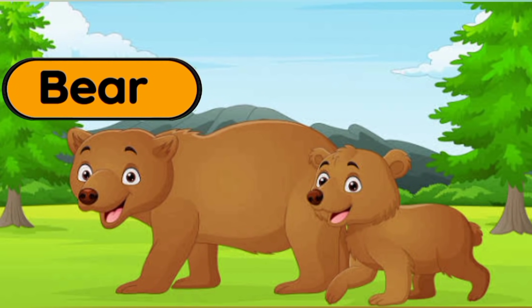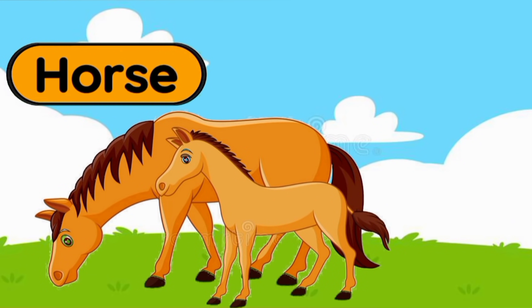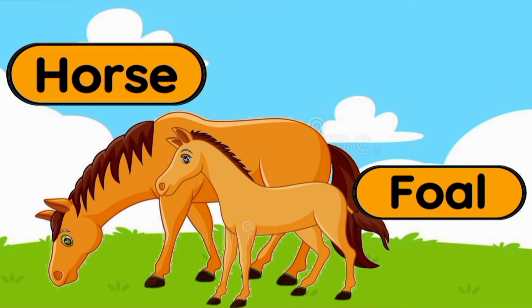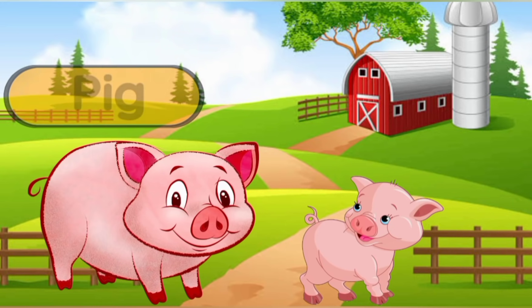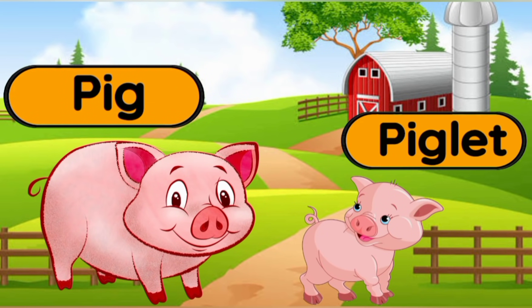Bear — a baby bear is called a cub. Horse — a baby horse is called a foal. Pig — a baby pig is called a piglet.